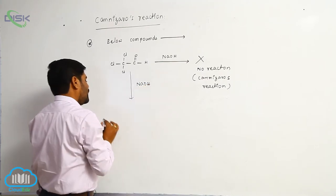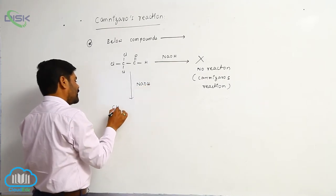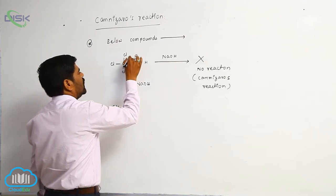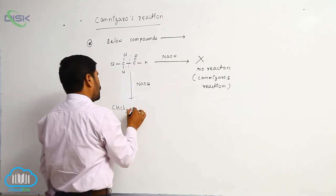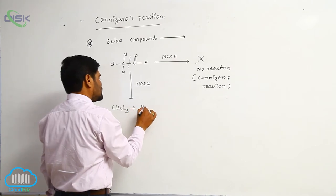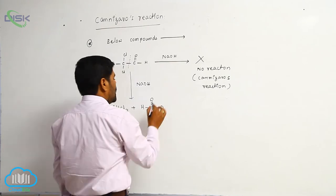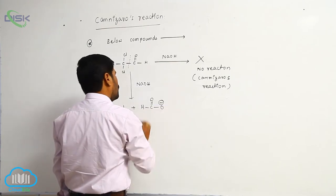A base. It forms rupture of this carbon takes place to form chloroform as well as which one? Formate ion. Which ion? Formate ion.